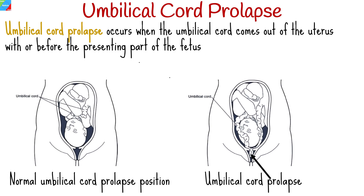Umbilical cord prolapse occurs when the umbilical cord comes out of the uterus with or before the presenting part of the fetus. It is an obstetric emergency.